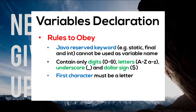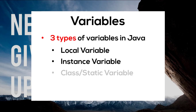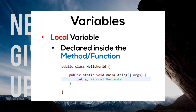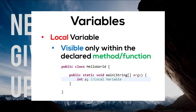Now that we know some basic concepts, we are going to explore the different types of variables as well as data types available in Java. For variables we basically have three different types: local variable, instance variable, and static variable. Local variables are declared inside the method. They are created when the method is entered and destroyed once it exits the method, and are only visible within the method.